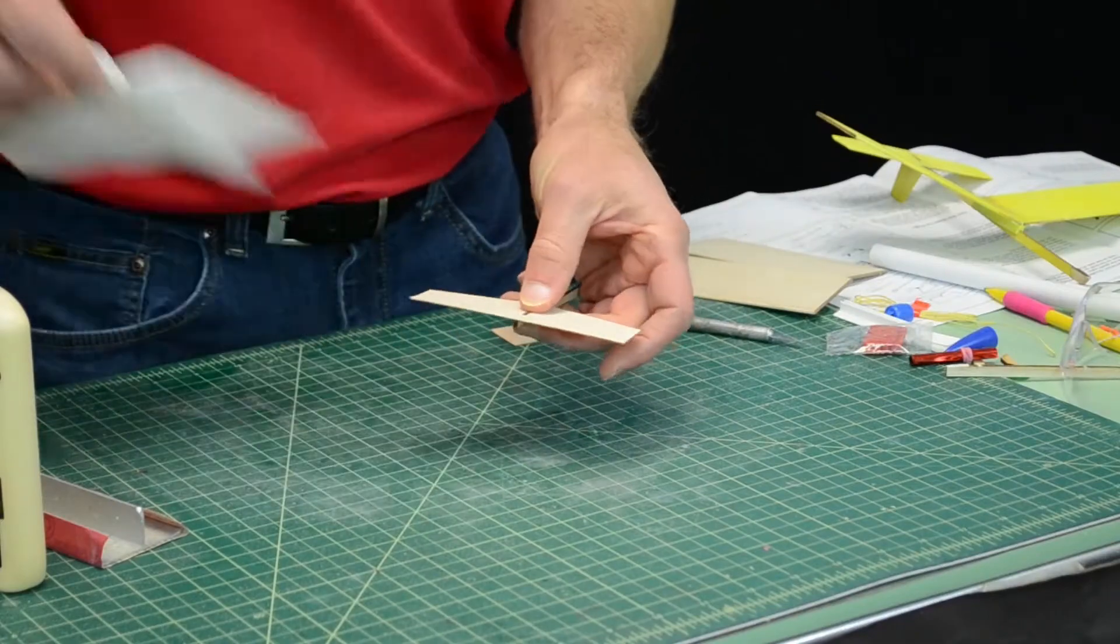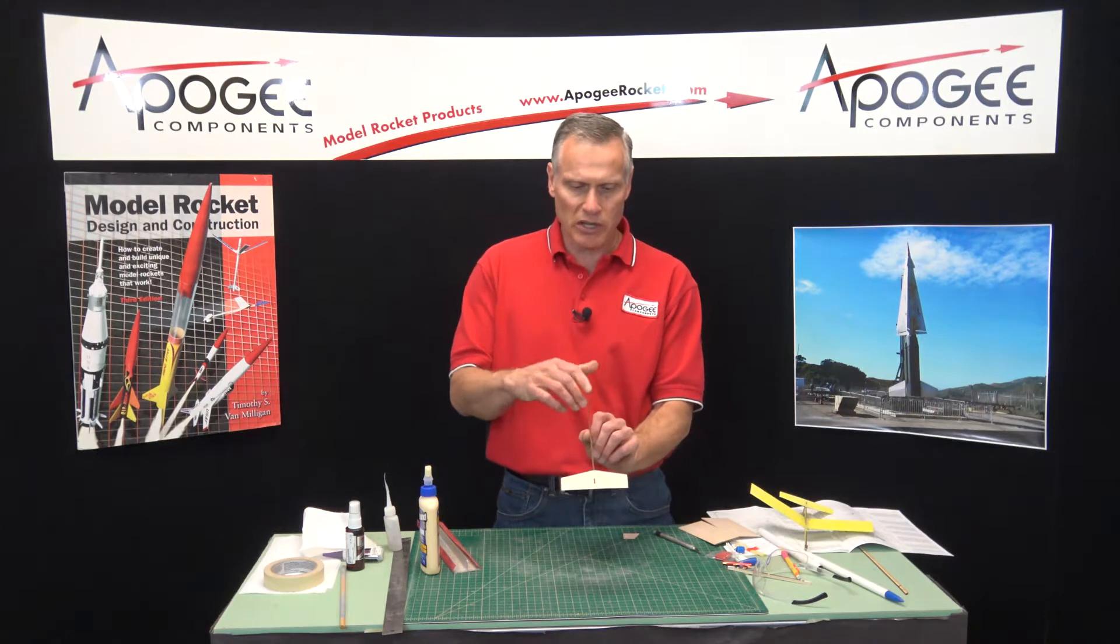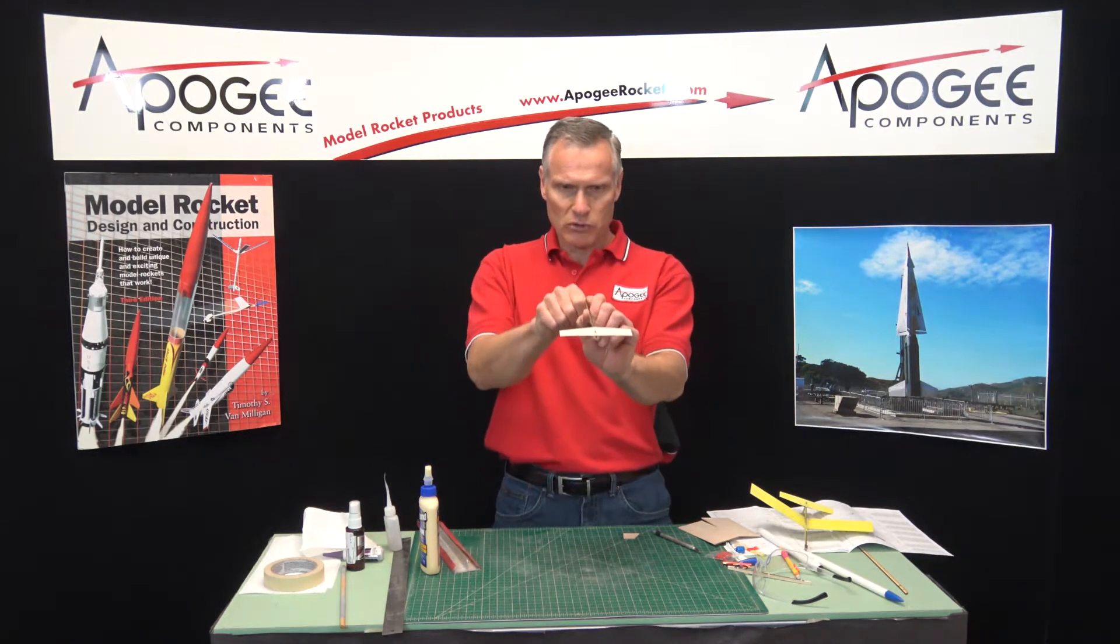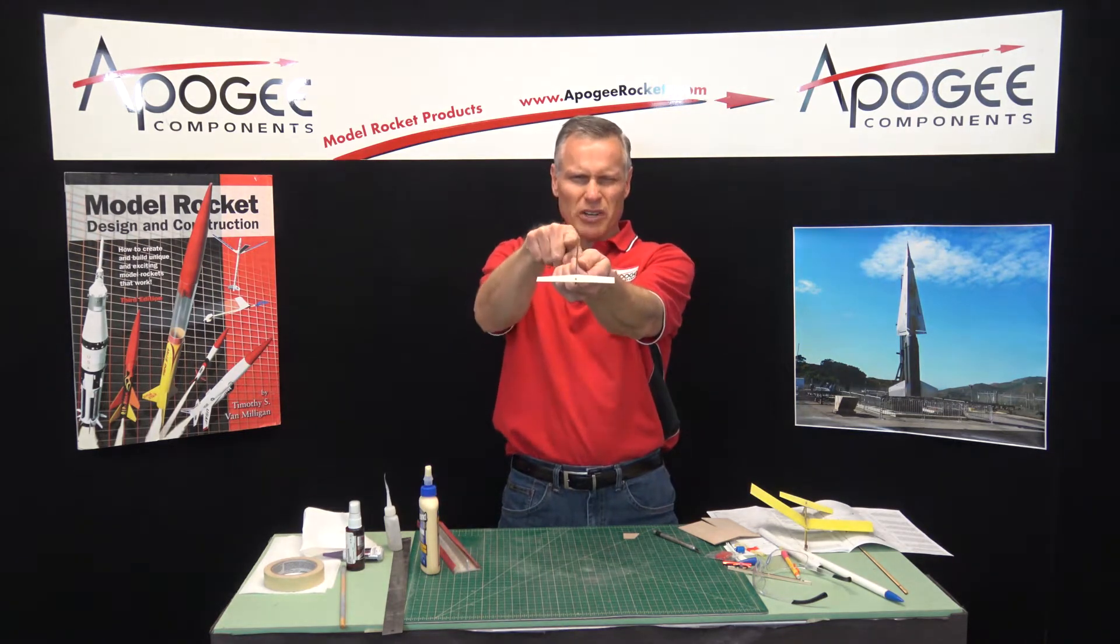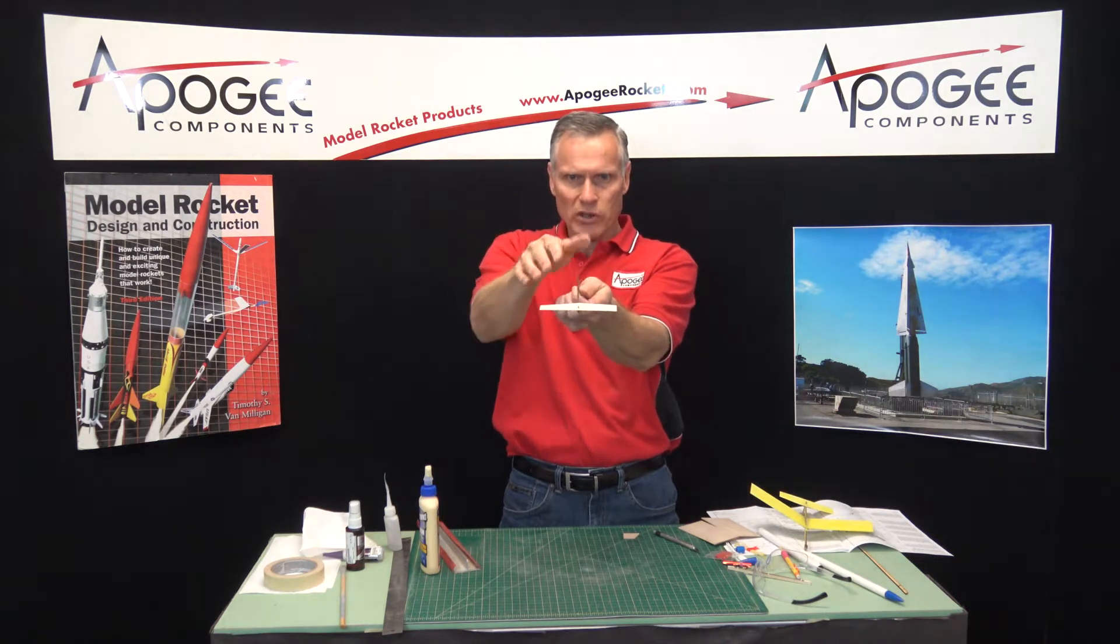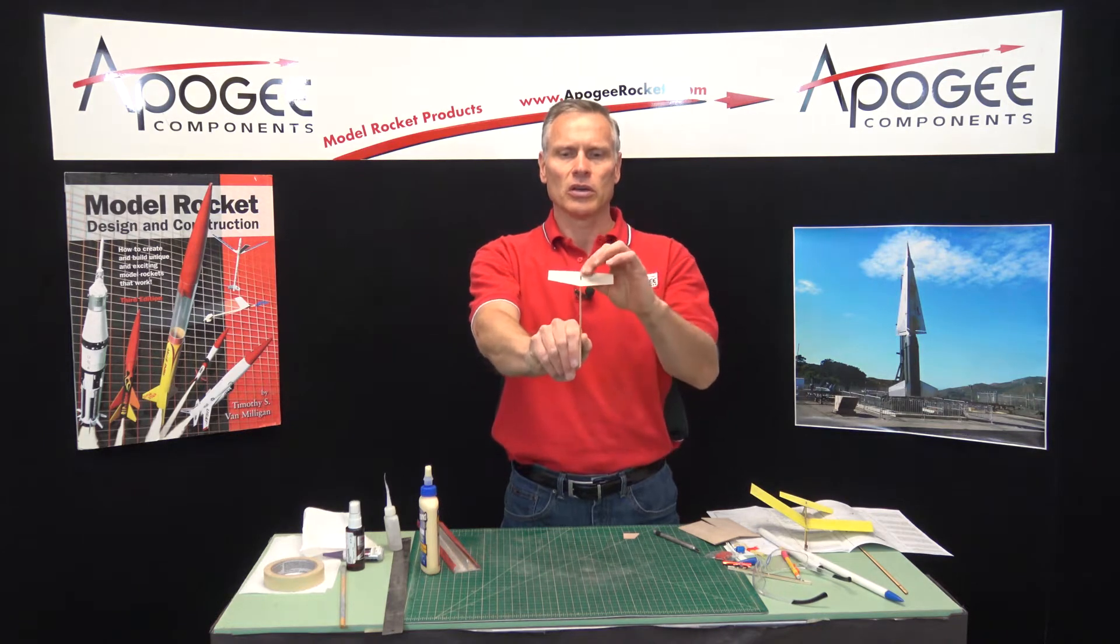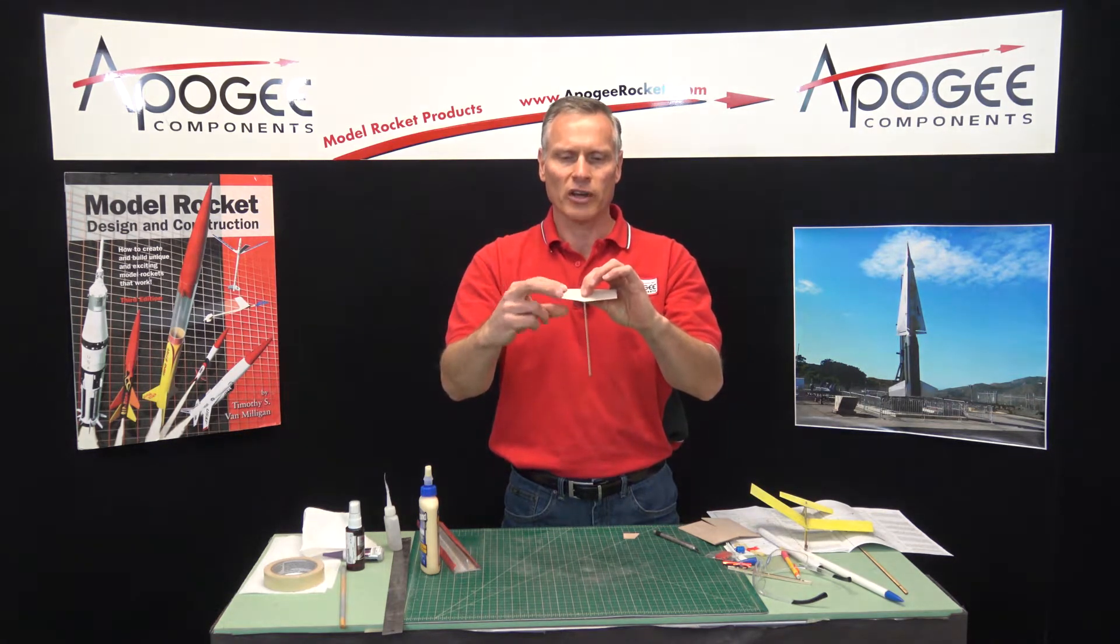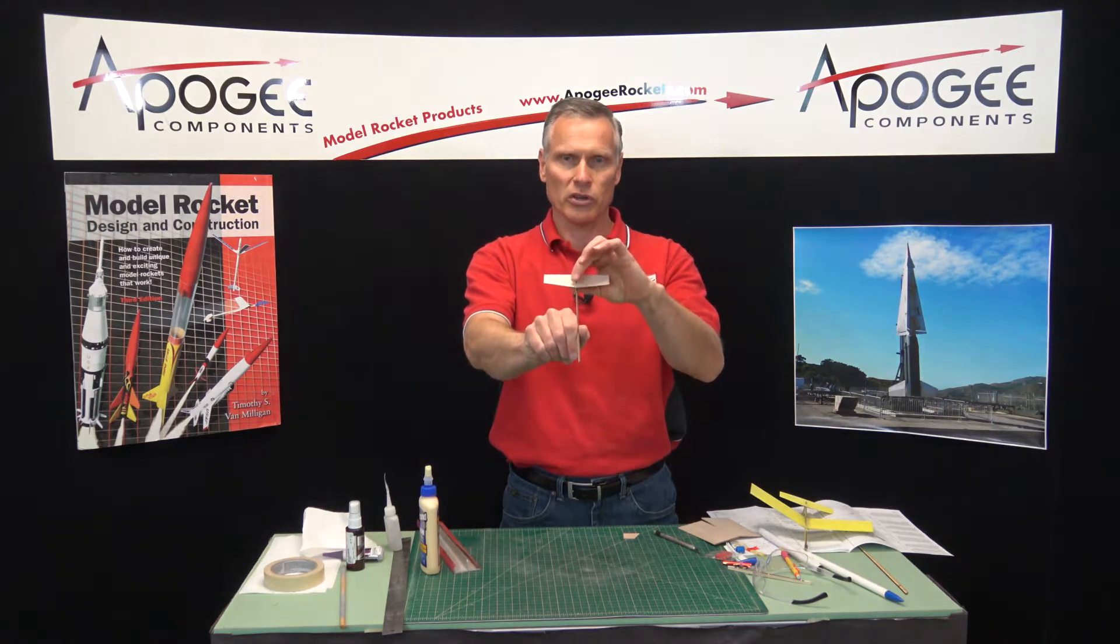Now it's fairly important that this be perpendicular to the fuselage boom. I want you to take the fuselage boom and look down it, and then make sure that it's not tilted one way or the other, because that's going to affect the flight of the rocket, particularly the boost.